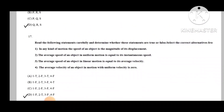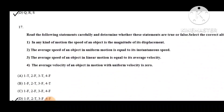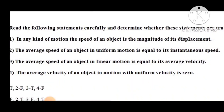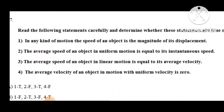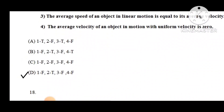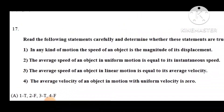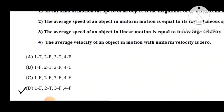Question number 17: Read the following statements and determine whether they are true or false. First: in any kind of motion, the speed of an object is the magnitude of its displacement. Second: the average speed of an object in uniform motion is equal to its instantaneous speed. Third: the average speed of an object in linear motion is equal to its average velocity. Fourth: the average velocity of an object in motion with uniform velocity is zero. The correct option is D — statement 1 false, 2 true, 3 false, 4 false.